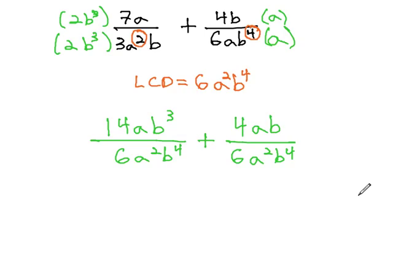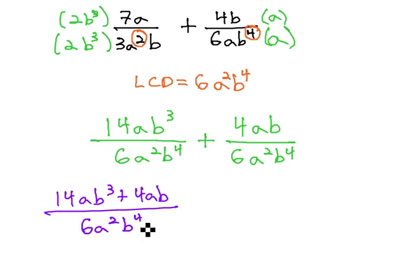We are now ready to add these together, as they have a common denominator. This gives us 14ab cubed plus 4ab. They're not like terms, so they can't be combined, over 6a squared b to the fourth.